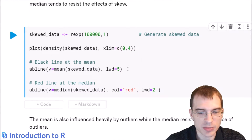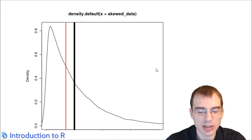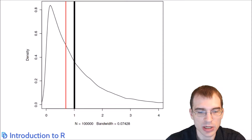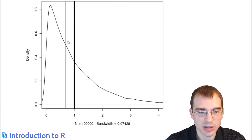We're going to create some skewed data and then plot the mean and median. In the skewed dataset that's pretty heavily skewed to the right, the mean — this black bar — is quite a bit further to the right than the median, because these extreme values are pulling the mean up, but the median isn't pulled up quite so much by that.